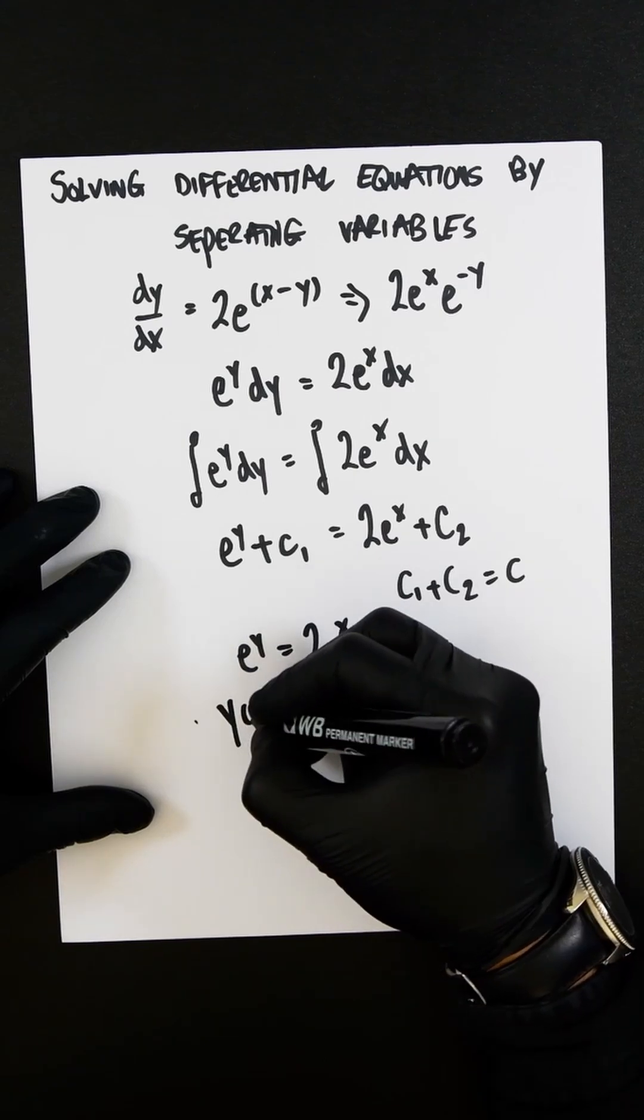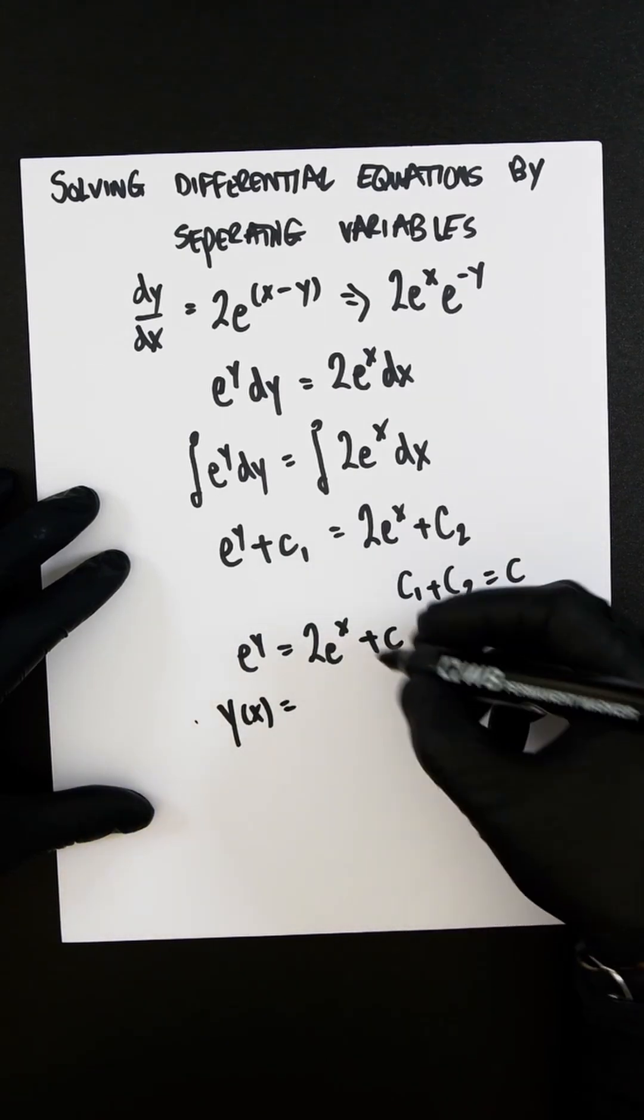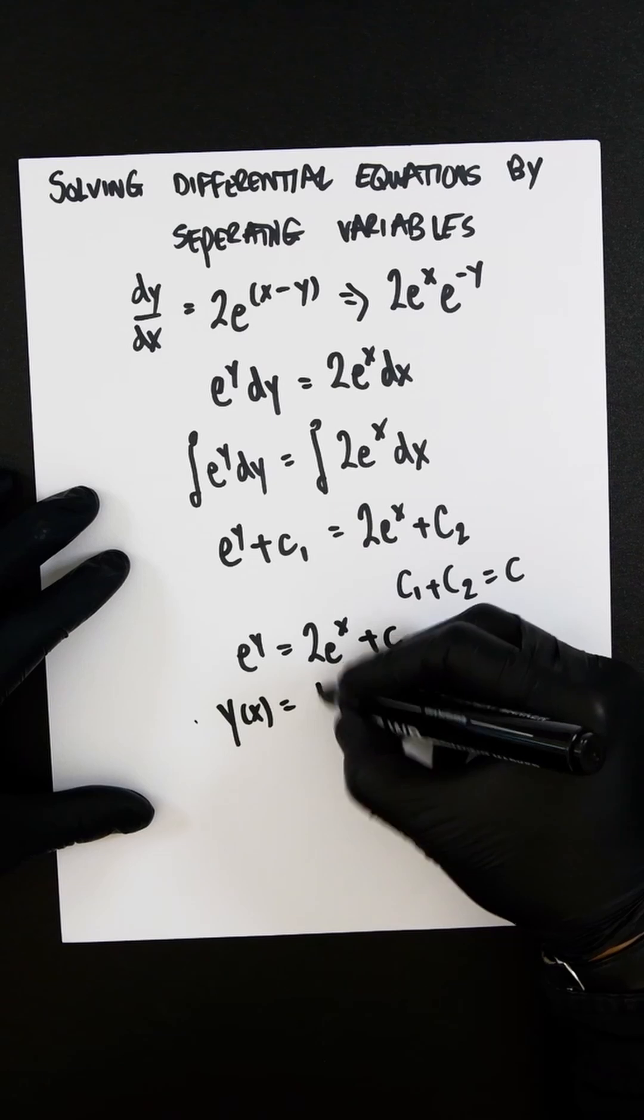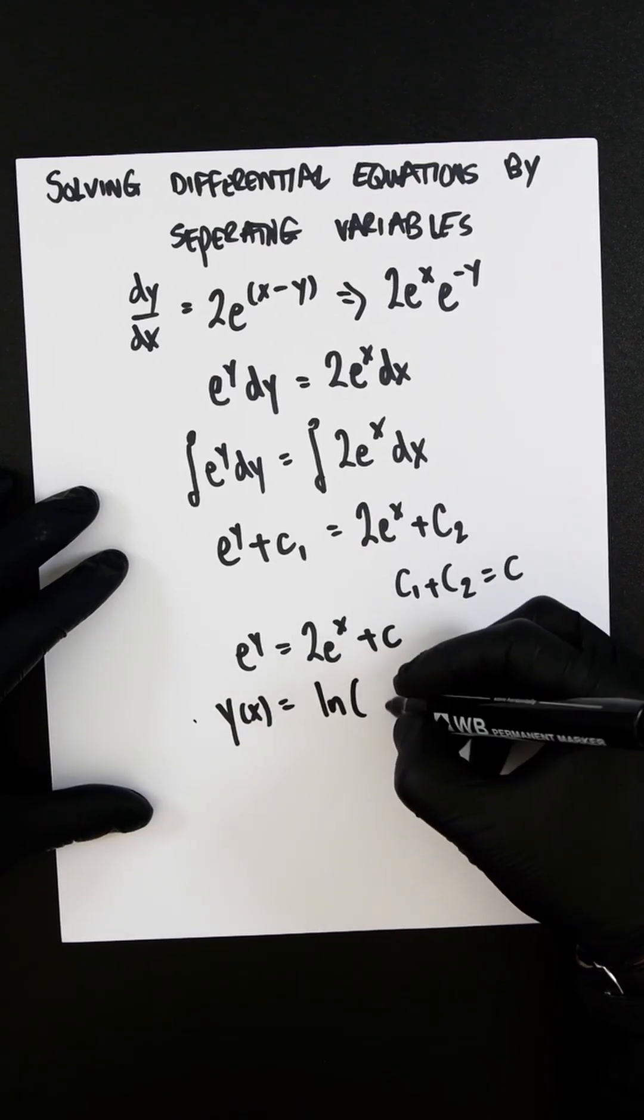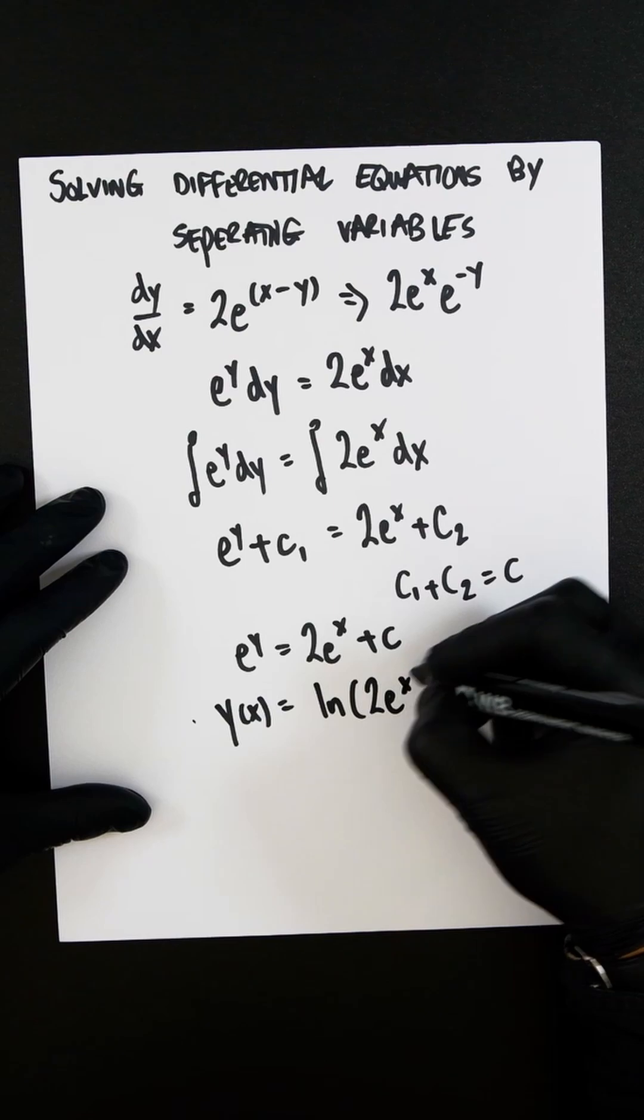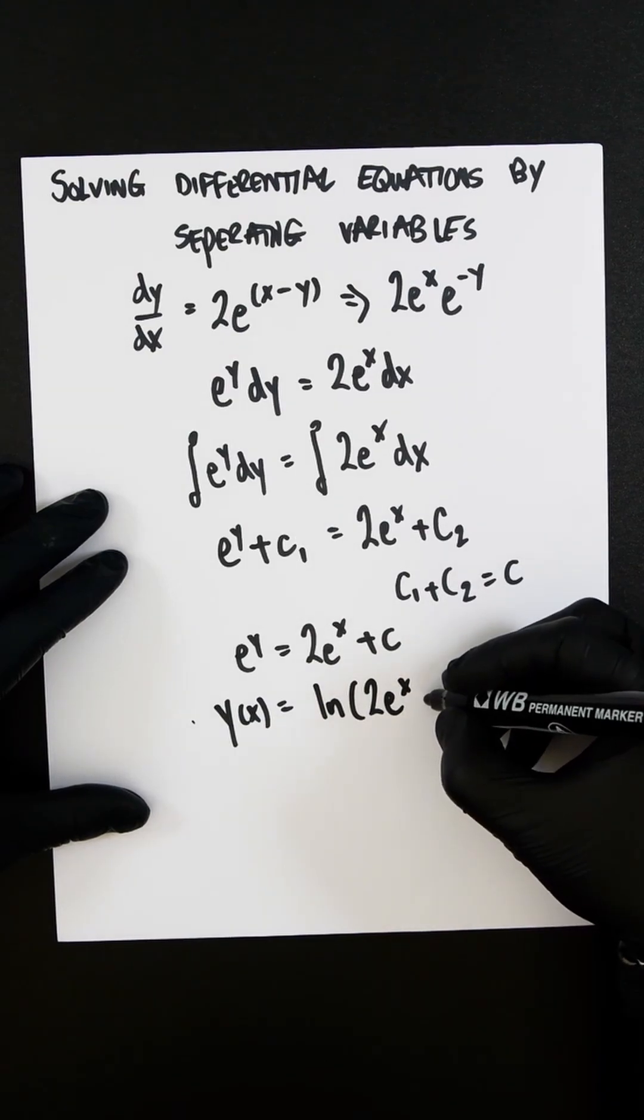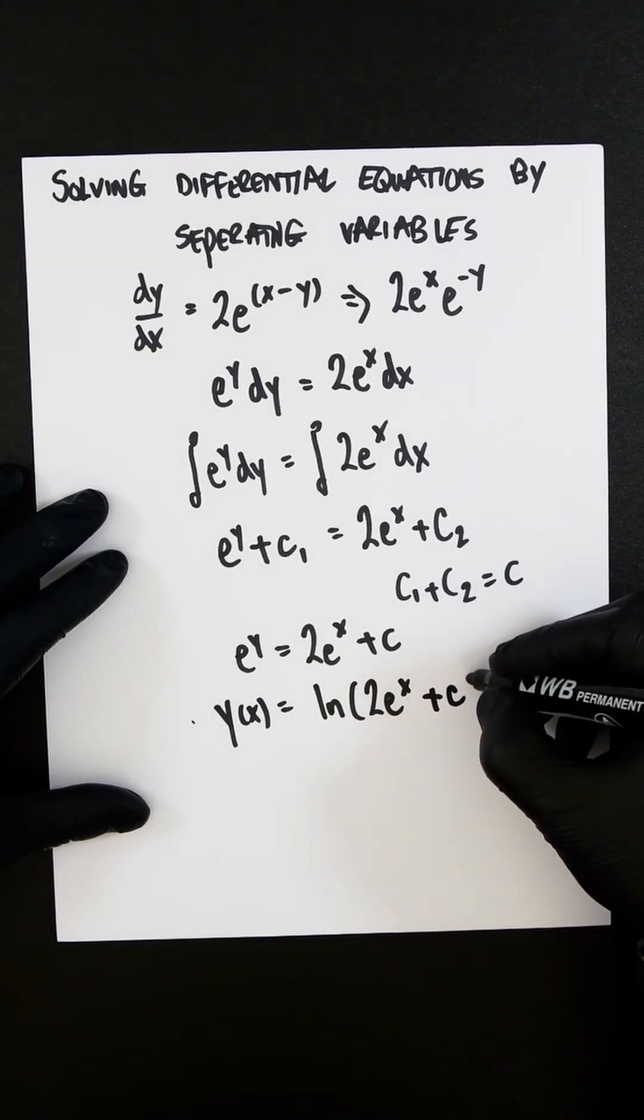You're going to get y with respect to x, which would equal ln of the whole of this. Make sure to include the constant, so it would be 2e^x plus c.